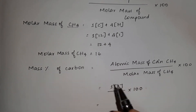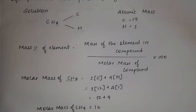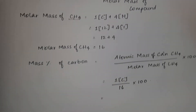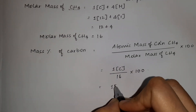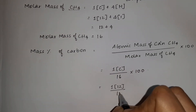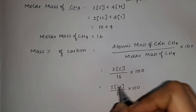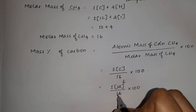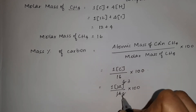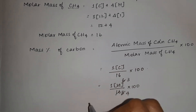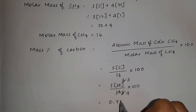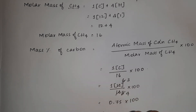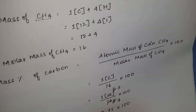Carbon atomic mass substituted: 1 into 12 divided by 16 into 100. So 12 divided by 16 simplifies to 3 by 4, which equals 0.75, multiplied by 100 gives 75%. So CH4 carbon mass percentage is 75%.